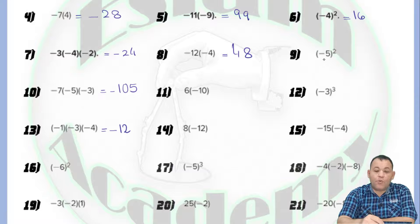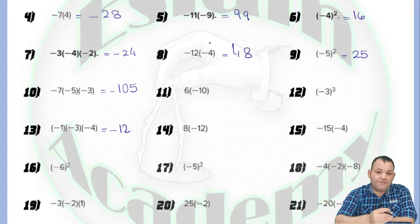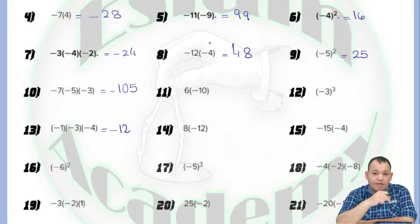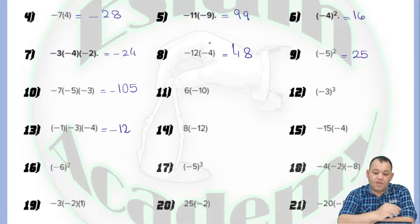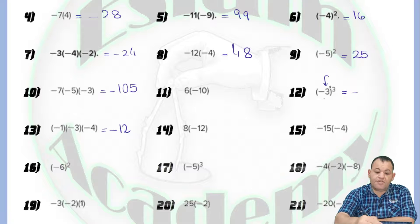For question number 9, we have negative 5 to the power 2. The number inside the bracket is negative and the power is even, so the answer will be positive. 5 to the power 2 equals 25, because 5 times 5 equals 25. If the number inside the bracket is positive, it doesn't matter if the power is even or odd — the answer will always be positive. The sign only changes when the number inside the bracket is negative: if the power is even, the answer is positive; if the power is odd, the answer is negative. For example, negative 3 to the power 3: the number is negative and the power is odd, so the answer is negative. 3 to the power 3 means 3 times 3 times 3, which equals 27. The answer is negative 27.